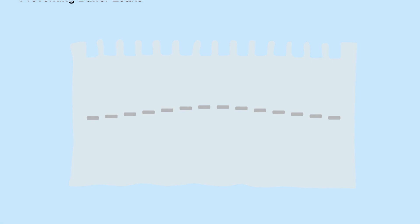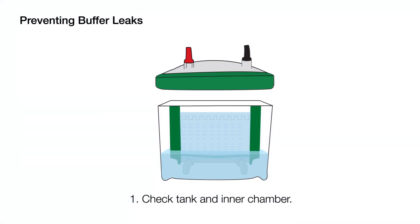Insufficient buffer or slow buffer leak will cause the gel to run unevenly during electrophoresis. Ensure that the electrode assembly is correctly set up to prevent buffer leaks.